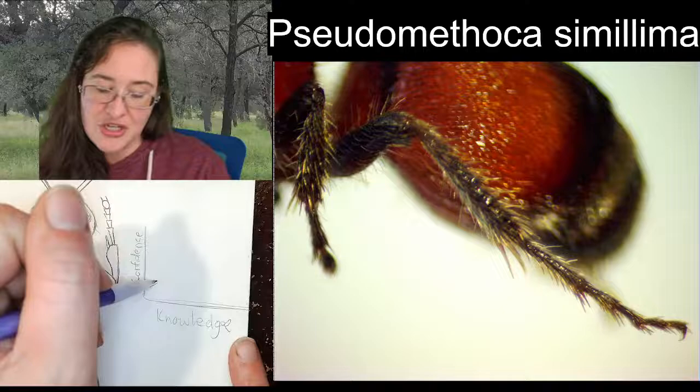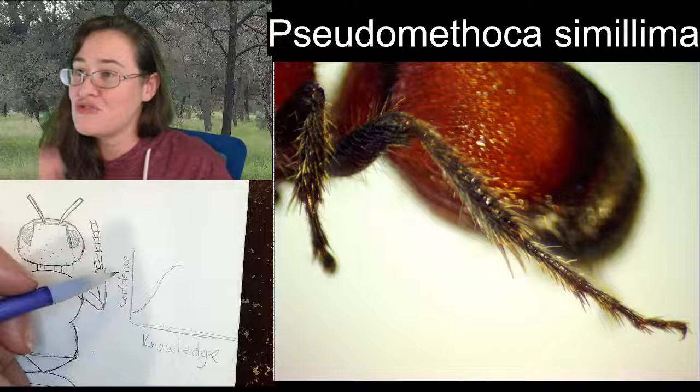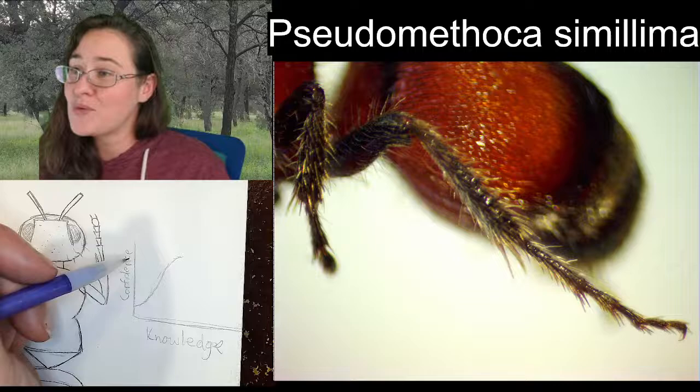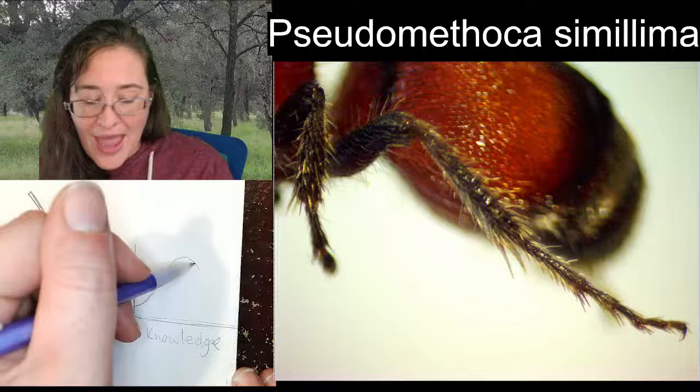Being an expert doesn't mean knowing absolutely everything. There's this wonderful chart that goes knowledge versus confidence. You first start learning things and gain a lot of confidence — there's a point at the very beginning where you're so confident you think you know it all. Then you learn more and more, your confidence starts to drop, and you start to realize you don't know as much as you thought you did.